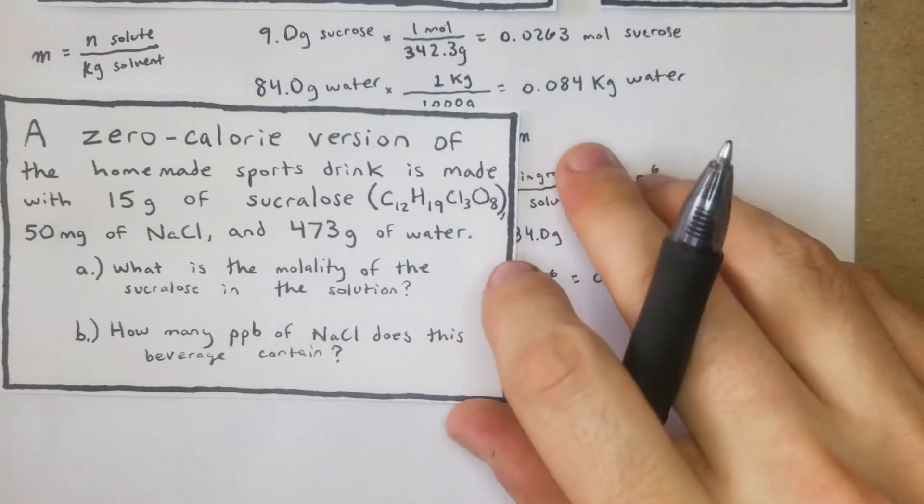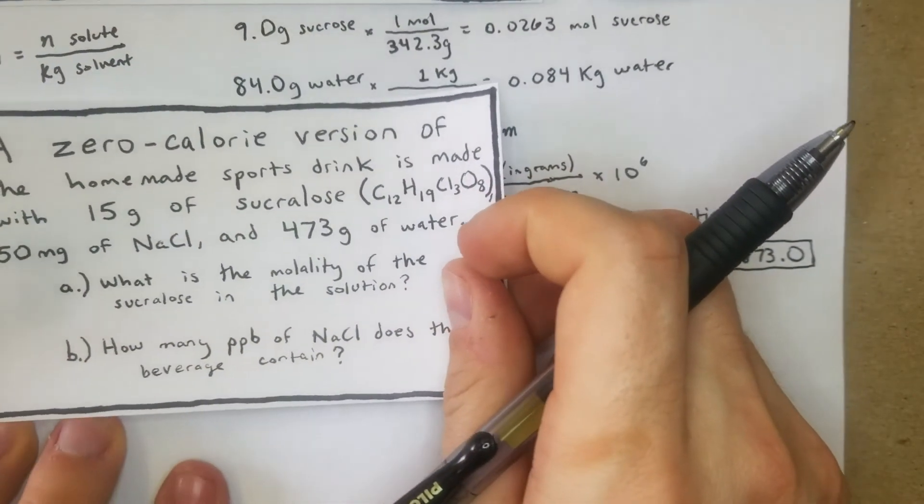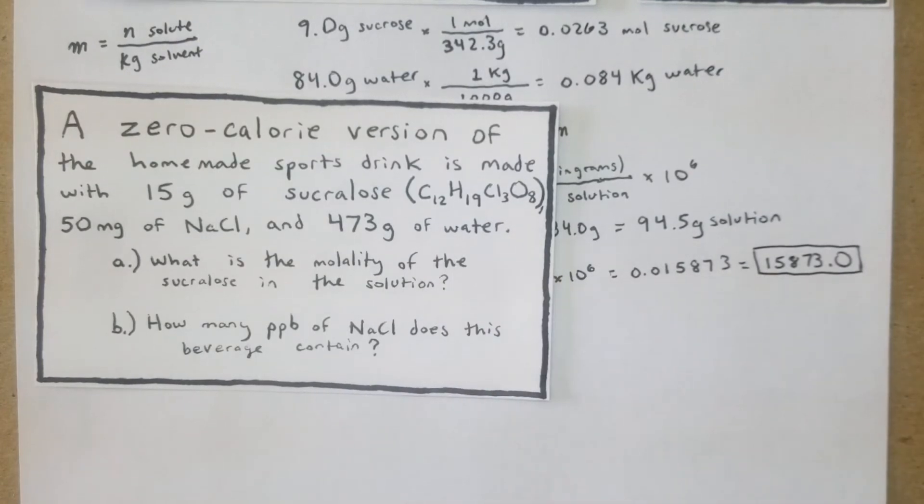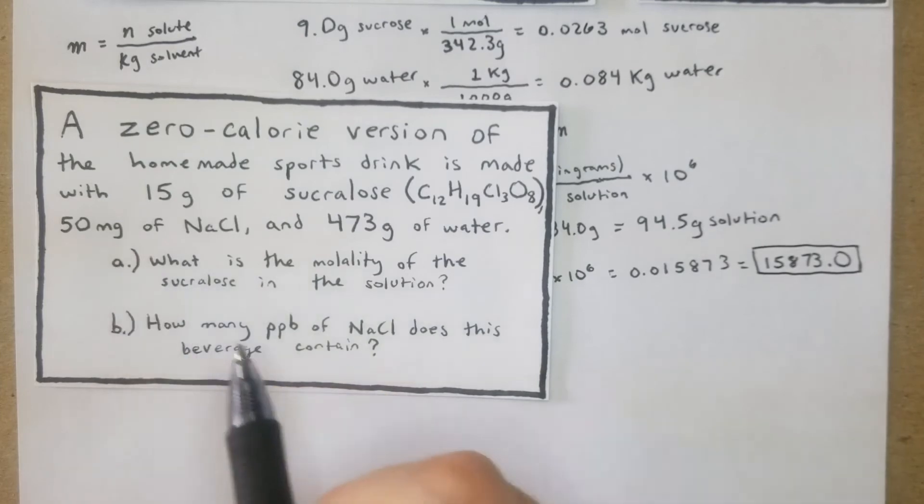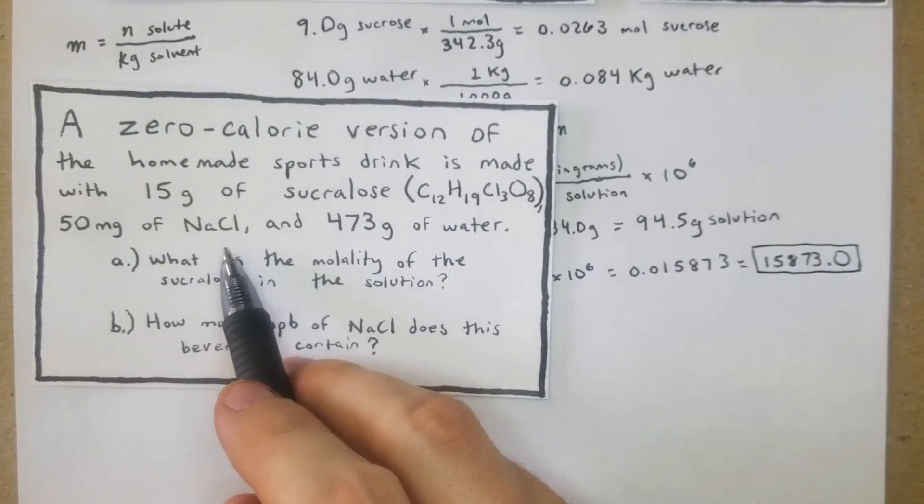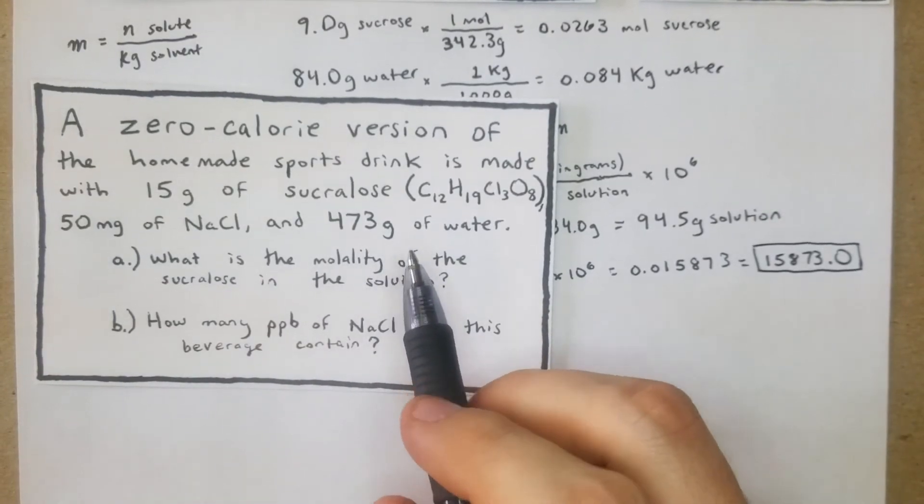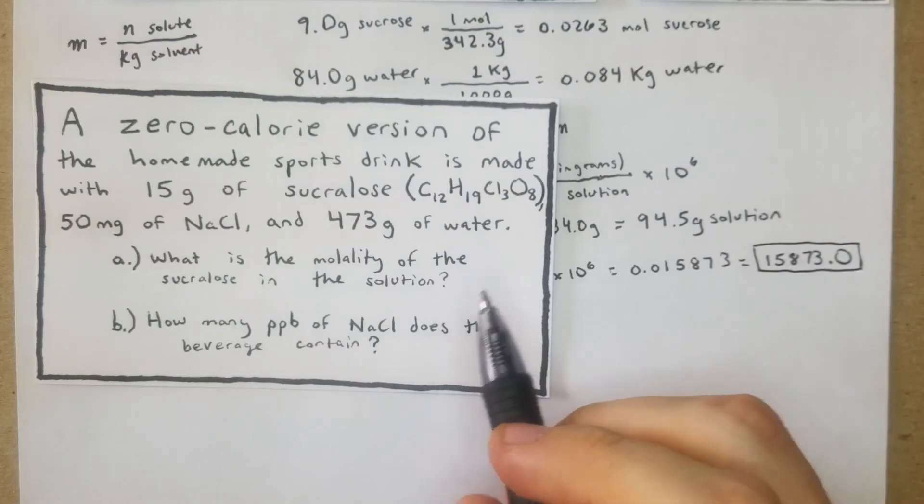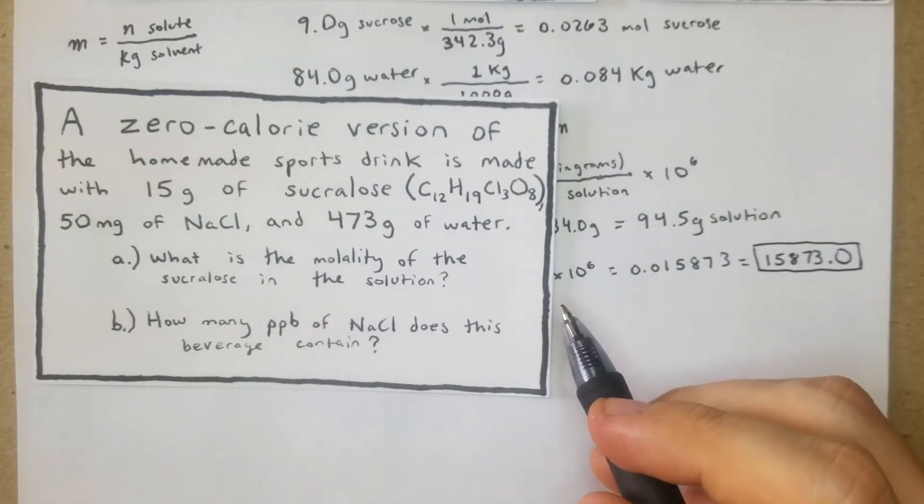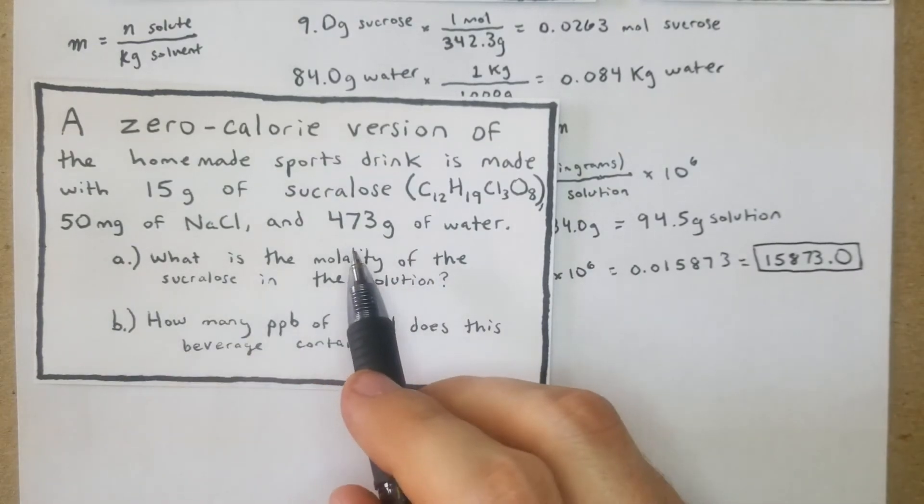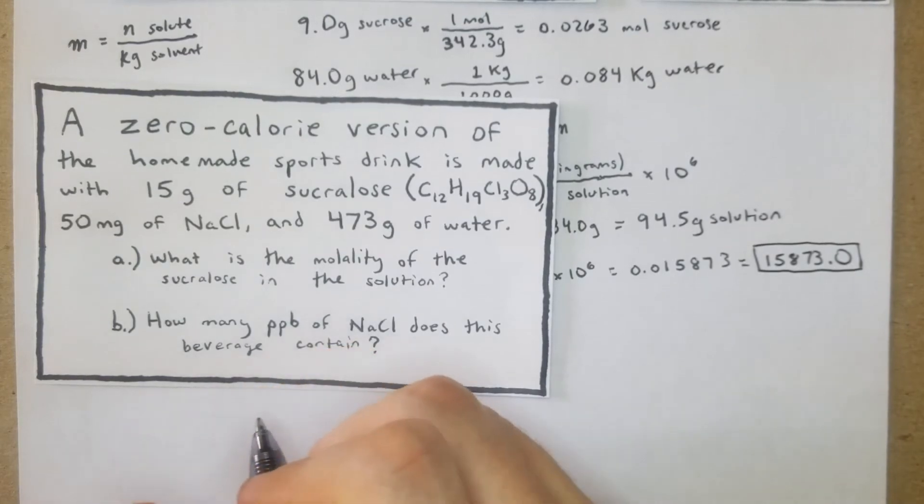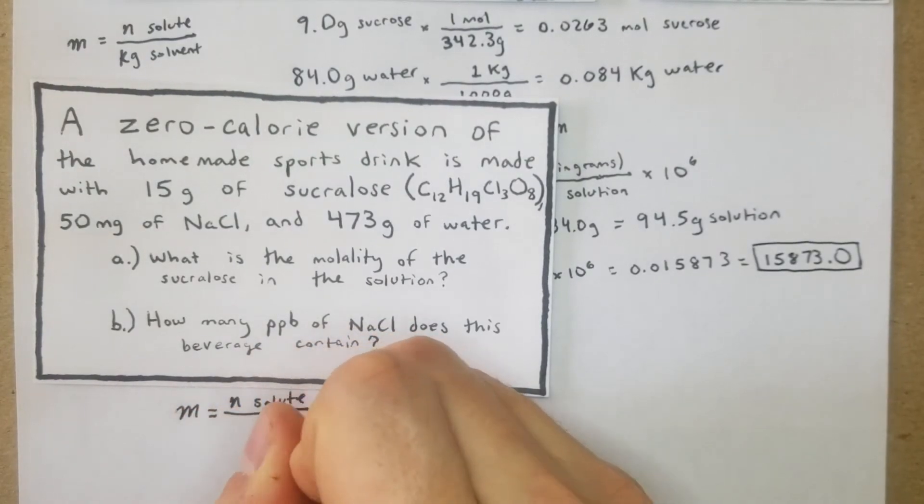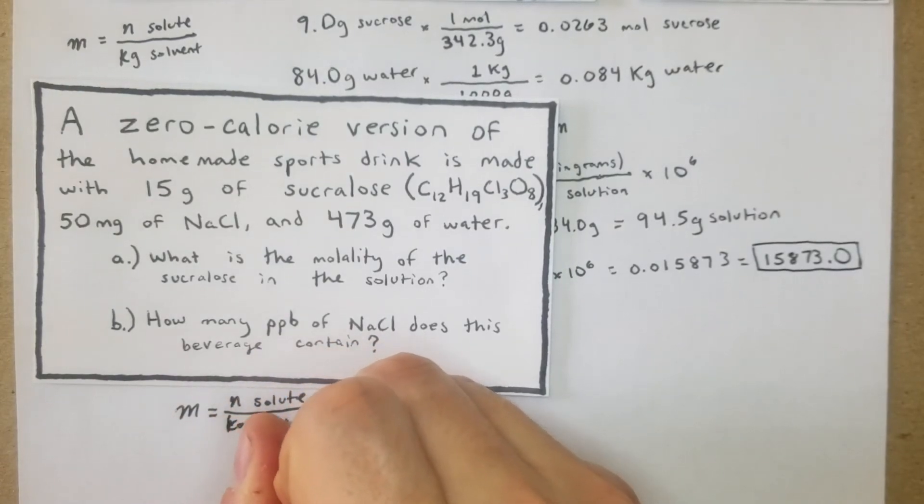We have a zero-calorie version of the homemade sports drink made with 1.5 grams of sucralose (C₁₂H₁₉Cl₃O₈) - that's like Splenda, a zero-calorie sweetener - 50 mg of NaCl, and 473 grams of water. The first problem had essentially one third of a cup with 75% of your daily sodium, so this one works out to be an actual sports drink someone could have.